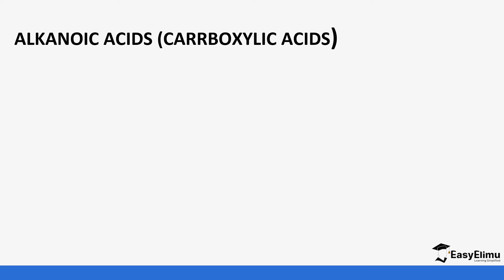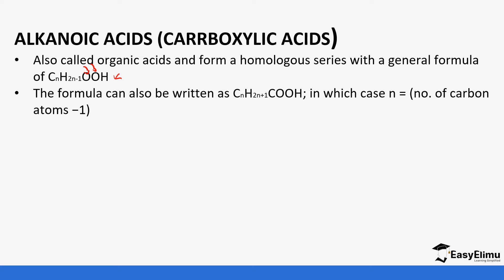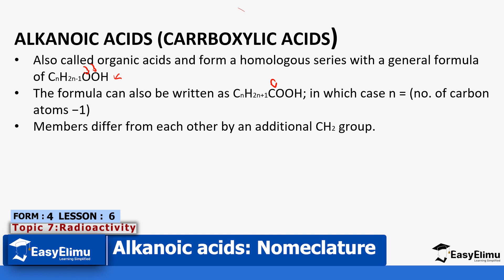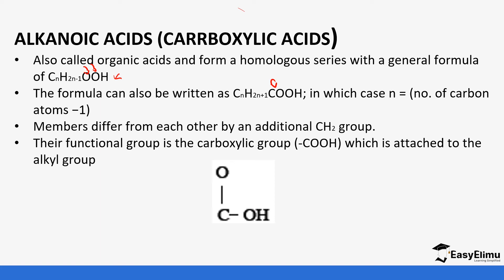So alkanoic acids, or carboxylic acids — this is the other name of the alkanoic acids — they usually form a homologous series with the formula you can see. You notice it has two oxygen atoms in its structure. The formula can also be written with the carbon, in which case the value of n is the number of carbons beginning from one. The members differ from each other by the addition of a CH₂, and their functional group is attached to the alkyl group.